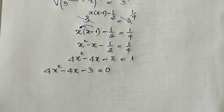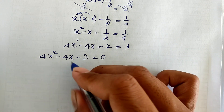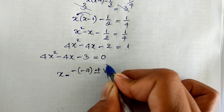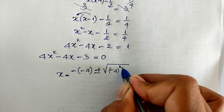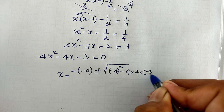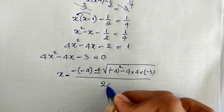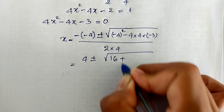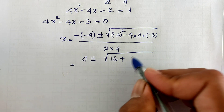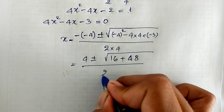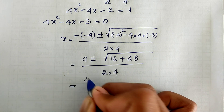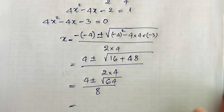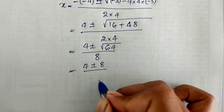Now this is our quadratic equation. Using the quadratic formula, h equals minus b which is minus 4, plus or minus the square root of (minus 4) squared minus 4 times 4 times (minus 3), all divided by 2 times 4, which is 8. So h equals 4 plus or minus the square root of 16 plus 48, all divided by 8, giving 4 plus or minus 8, divided by 8.